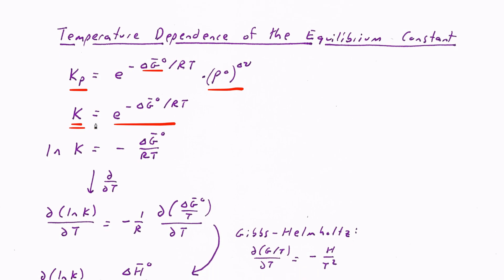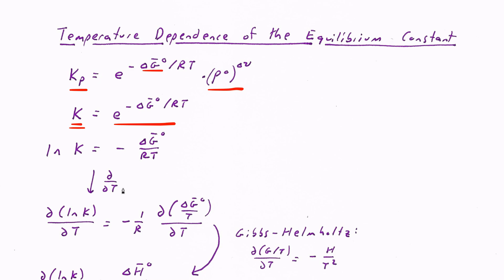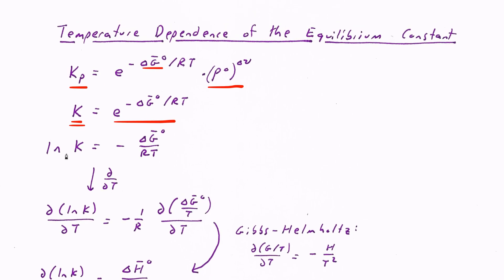Using that expression, if I take the log, ln K equals minus ΔG over RT. To understand the temperature dependence, let's take the temperature derivative and see how both sides change as temperature changes. The derivative of ln K with respect to temperature must equal the derivative of minus ΔG over RT with respect to temperature. The minus 1 over R has no temperature dependence, but ΔG and T could both change with temperature.